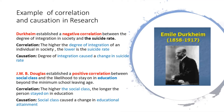Let us take concrete examples. Durkheim established a negative correlation between the degree of integration in society and the suicide rate. He found that the more a person is integrated in society — in the family and in the community — the less likely they are to commit suicide. The higher the degree of integration of an individual in society, the lower the rate of suicide: a negative correlation. And in terms of causation, degree of integration caused a change in suicide rate. Through establishing a correlation, he was able to find the cause.